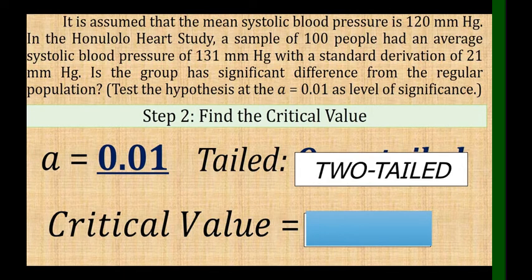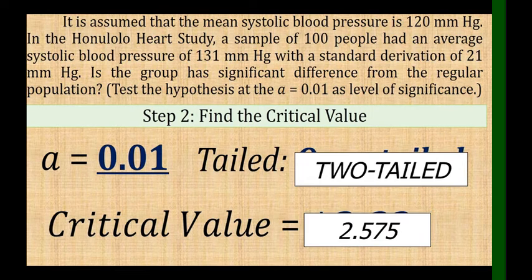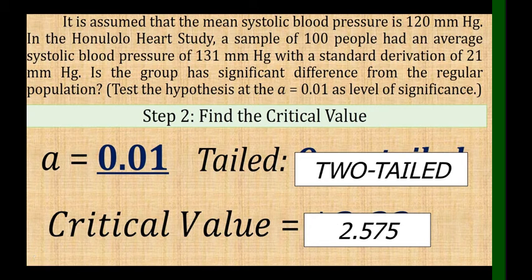The critical value is 2.575. If you still don't know how to determine if it is two-tailed or how to find 2.575, I suggest you review the video about the easy tips for hypothesis testing, which you can find on this YouTube channel.